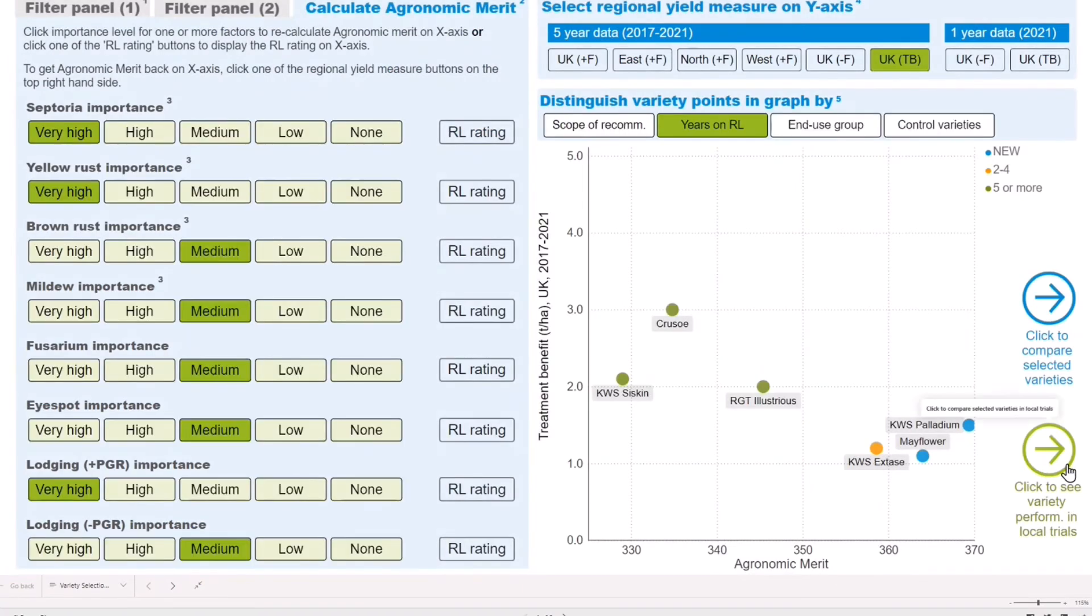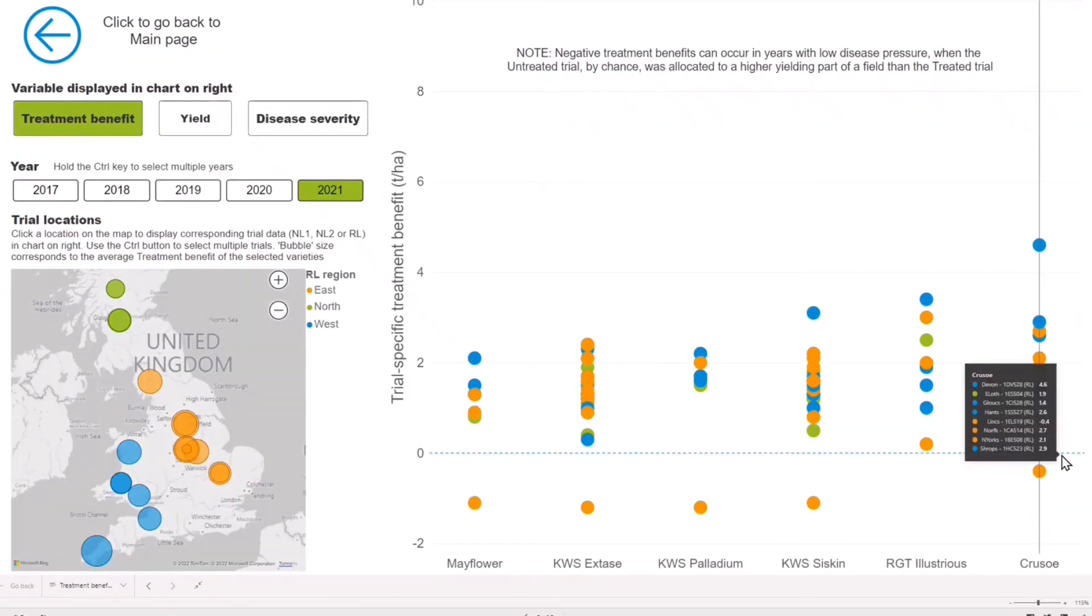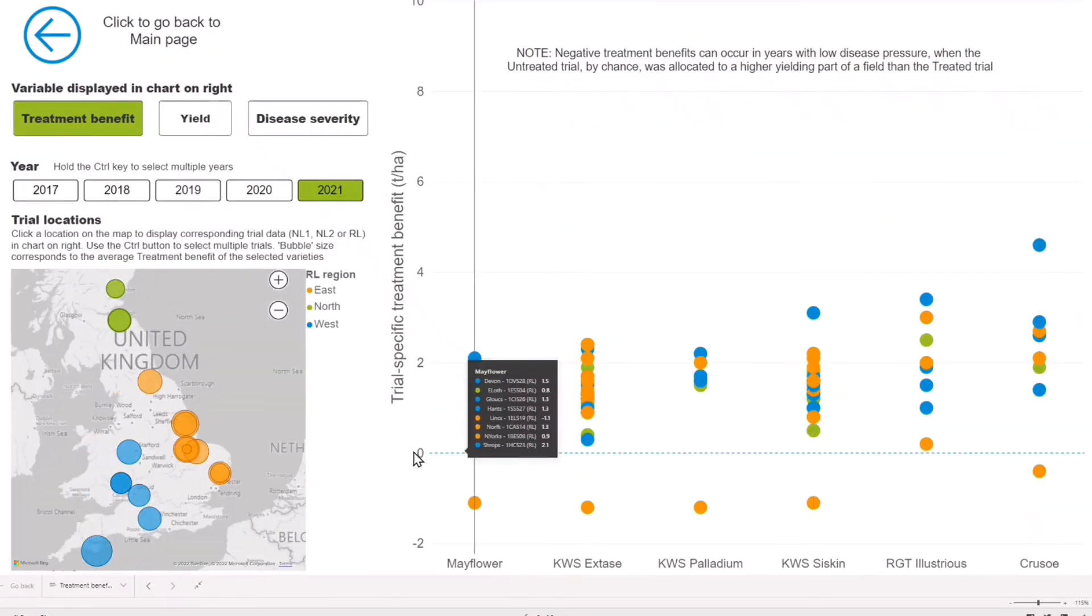Click on the right-pointing green arrow to see how selected varieties perform in trial subsets. A new chart on the right lets you view how treatment benefit and disease severity varied across sites and years. You can look at just one site in one year, right up to all sites in all years.